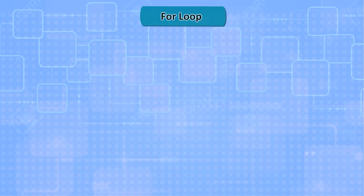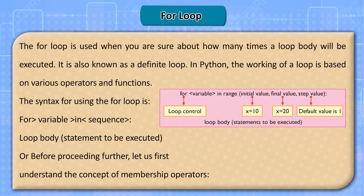For loop: the for loop is used when you are sure about how many times a loop body will be executed. It is also known as a definite loop. In Python, the working of a loop is based on various operators and functions. The syntax for using the for loop is: for variable in sequence, loop body statement to be executed. Before proceeding further, let us first understand the concept of membership operators.